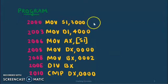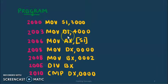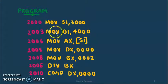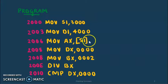The first line of code will point the SI register to the location 3000, where we'll have the number to be checked. This is a 3-byte instruction so the next line of code is at 2003, where we'll point the DI register to the location 4000 where we'll have the result. This is a 3-byte instruction so the next line of code is at 2006, where we'll move the content pointed to by SI to the register AX. This is a 2-byte instruction so the next line of code is at 2008.